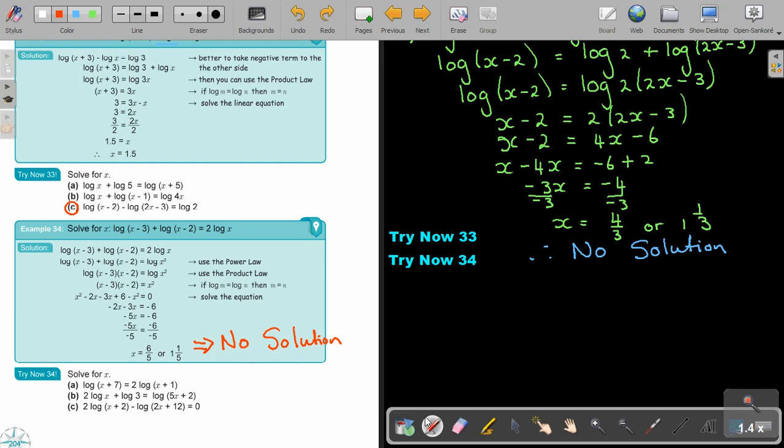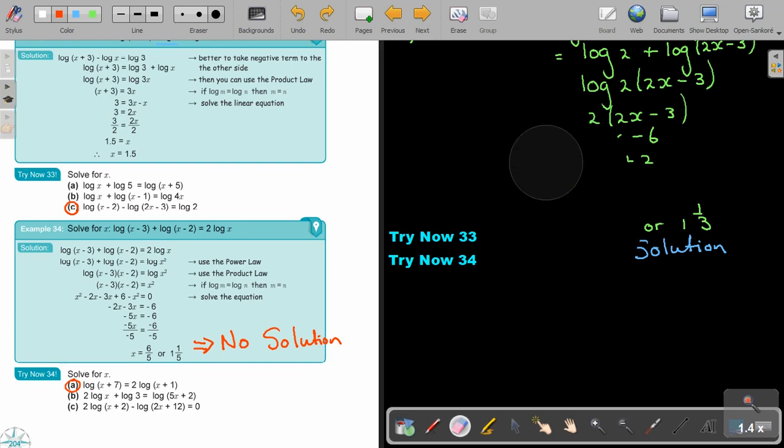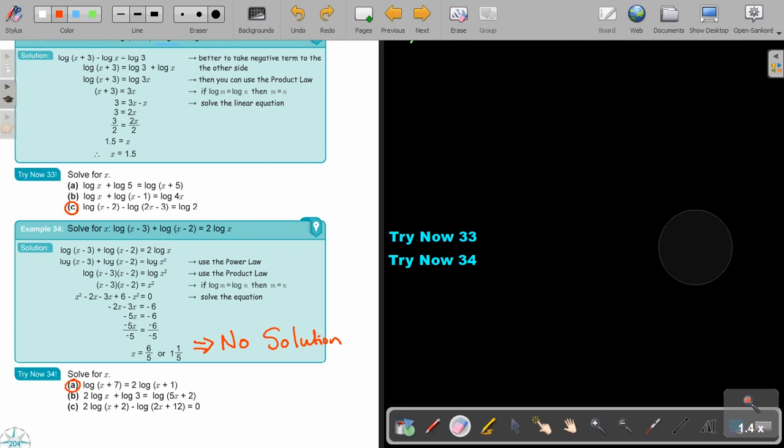The final answer, the one I want you to do, I just want you to do number A. Again, you can continue the video. Stop it first. First try it on your own. And then continue the video as soon as you are finished to see if you are correct.